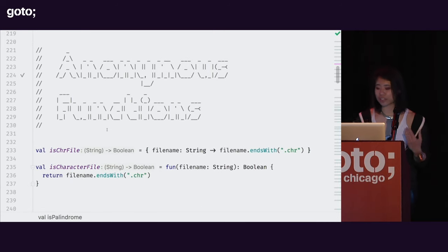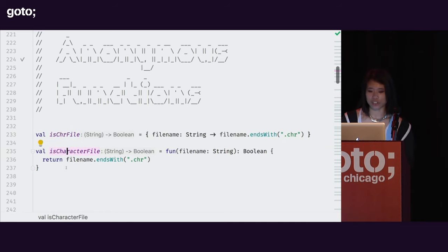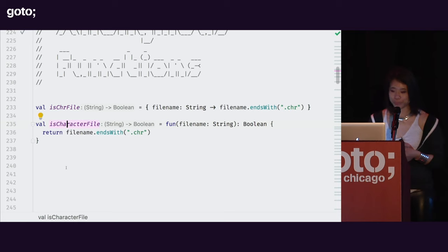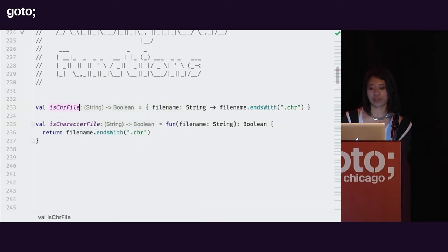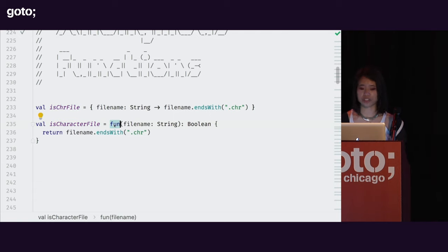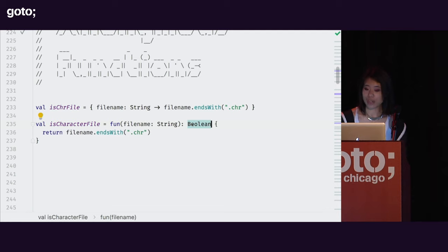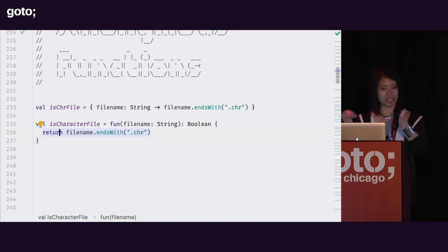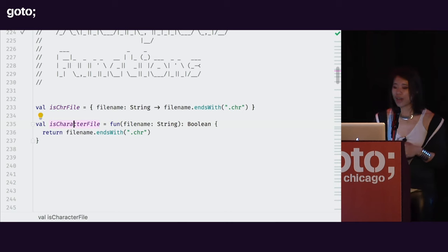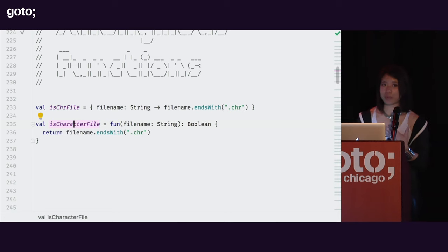Anonymous functions are another flavor of function literal in Kotlin. The interesting thing about anonymous functions is that they are declared similar to regular function declarations — you have the fun keyword — but they omit the function name. While they are still function declarations, they do have a return type. And because they use the fun keyword, you can do a local return because you're returning from that local function scope. It gets stored in an immutable value just like the lambda.